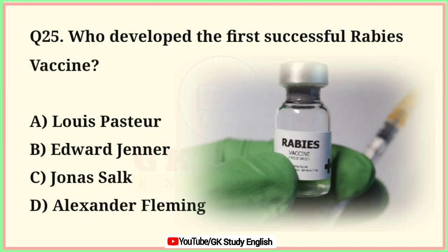Question number 25. Who developed the first successful rabies vaccine? A. Louis Pasteur. B. Edward Jenner. C. Jonas Salk. D. Alexander Fleming. Correct answer is option A. Louis Pasteur.